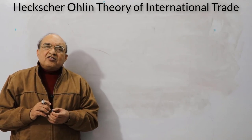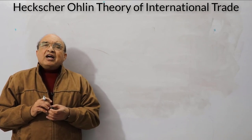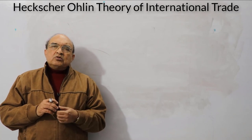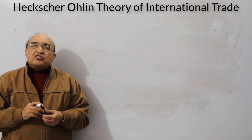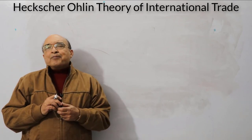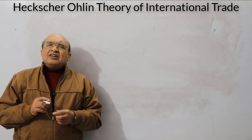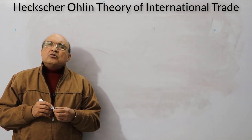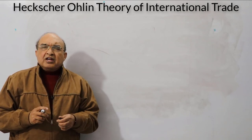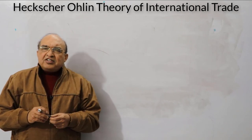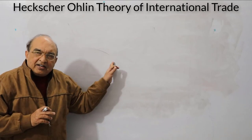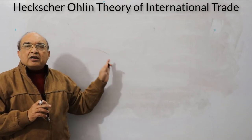The theory is important because it explains the source of comparative advantage. Comparative advantage, as per the Ricardian theory of comparative cost advantage, is the basis for international trade. Today we will concentrate on the Heckscher-Ohlin theory, which seeks to explain what is the source of comparative advantage — what the theory is about and especially what its conclusion is.